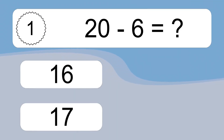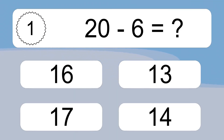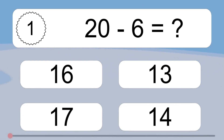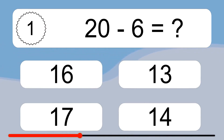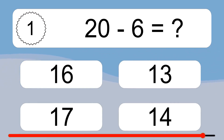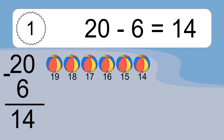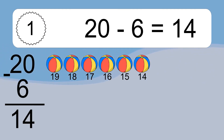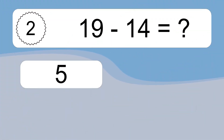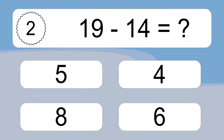20 minus 6 equals what? 20 minus 6 equals 14. Let's count it! 19, 18, 17, 16, 15, 14.